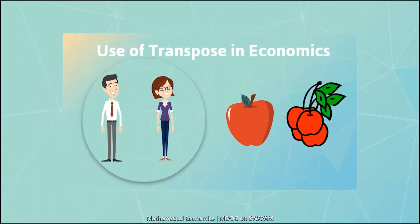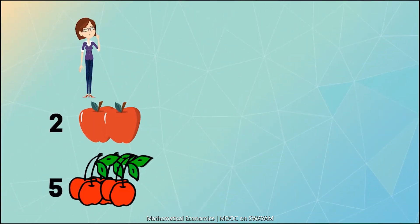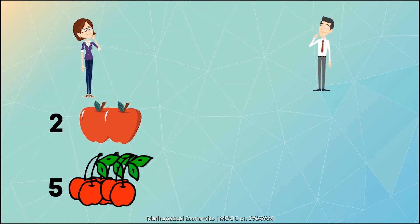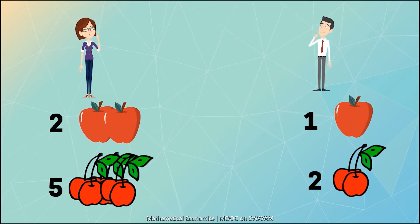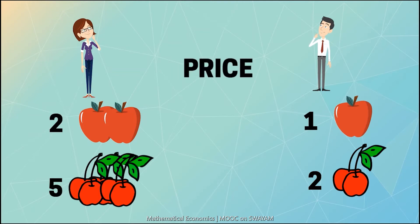Suppose the woman consumes two apples and five cherries, and the man consumes one apple and two cherries in a day. If we have additional information about the price, the price of apple is rupees 5 per unit and the price of cherry is rupees 2 per unit.